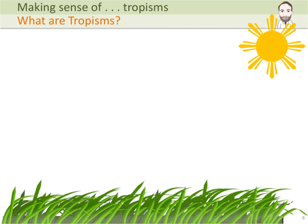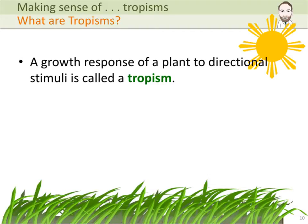So, what are tropisms? A tropism is a growth response of a plant to a directional stimuli. What that means is that if a plant detects something, then it might be able to grow towards it or away from it.